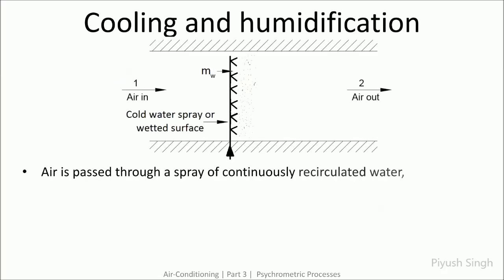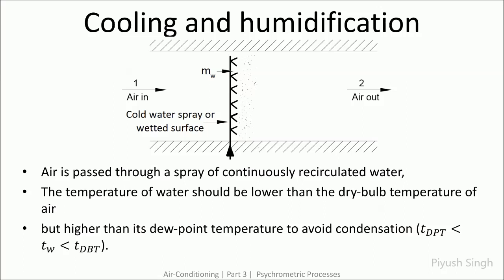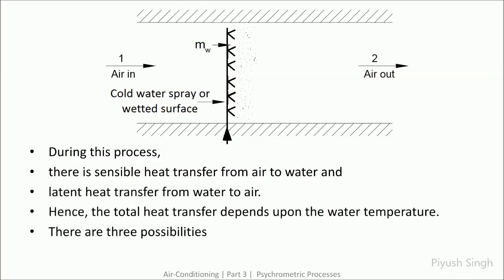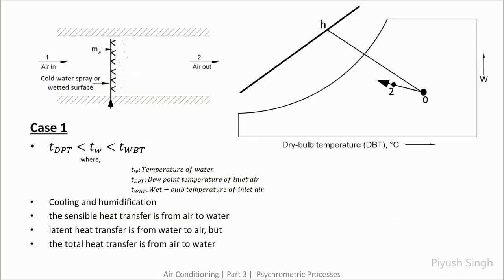The next process is cooling and humidification. A spray of water is added to the incoming air; the water temperature should be lower than the dry bulb temperature but higher than the dew point temperature. During this process, there is sensible heat transfer from air to water and latent heat transfer from water to air, so the total heat transfer depends upon the water temperature. There are three possibilities: if the water temperature lies between the dew point temperature and the wet bulb temperature, cooling and humidification takes place and the total heat transfer is from air to water, resulting in a drop in enthalpy of the air.